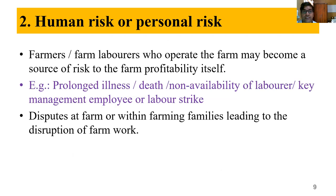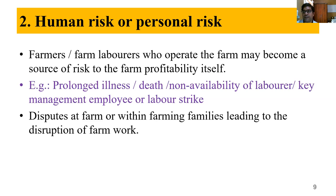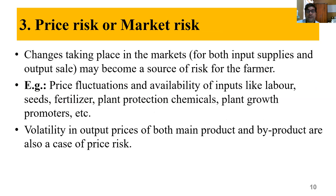Human risk or personal risk: the farmers and farm laborers who operate the farm may also become a source of risk to farm profitability. This is because of prolonged illness, death, non-availability of labor, key management employees, or labor strikes. Disputes and scuffles within the farm or farming families may lead to disruption of farm work. For example, if two brothers divide the land and there are permanent laborers, it becomes unclear which brother the laborer should work for — these human elements pose risk, called human or personal risk.